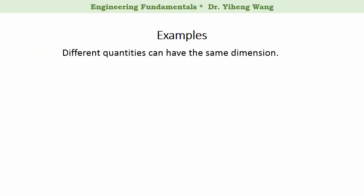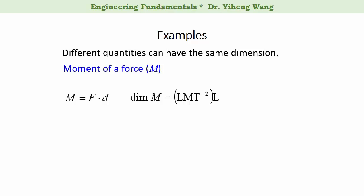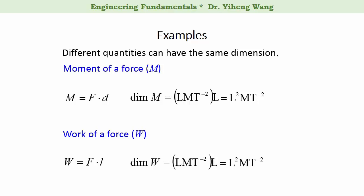Sometimes different quantities can have the same dimension. For example, the moment of a force is defined in a simplified way as force multiplied by d, the moment arm. Therefore, the dimension of moment is the dimension of force — L M T to the negative second power — multiplied by the dimension of the moment arm, which is length L, giving L squared times M times T to the negative second power. Similarly, work of a force is defined as force times l, the displacement along the line of action. The dimension of work is also L squared M T to the negative second power. Although the dimensions are the same, the meanings of these two quantities are not.